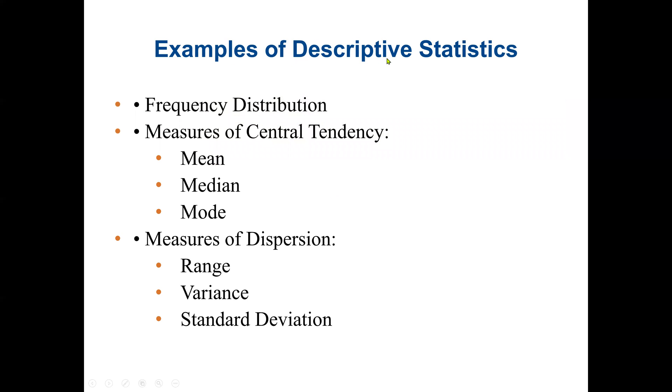An example of descriptive statistics would be using a frequency distribution to organize our data set, or measuring the central tendency, which is the mean, median, mode, or measures of dispersion. Dispersion means the variation of the data. So we can find the range, variance, and standard deviation.